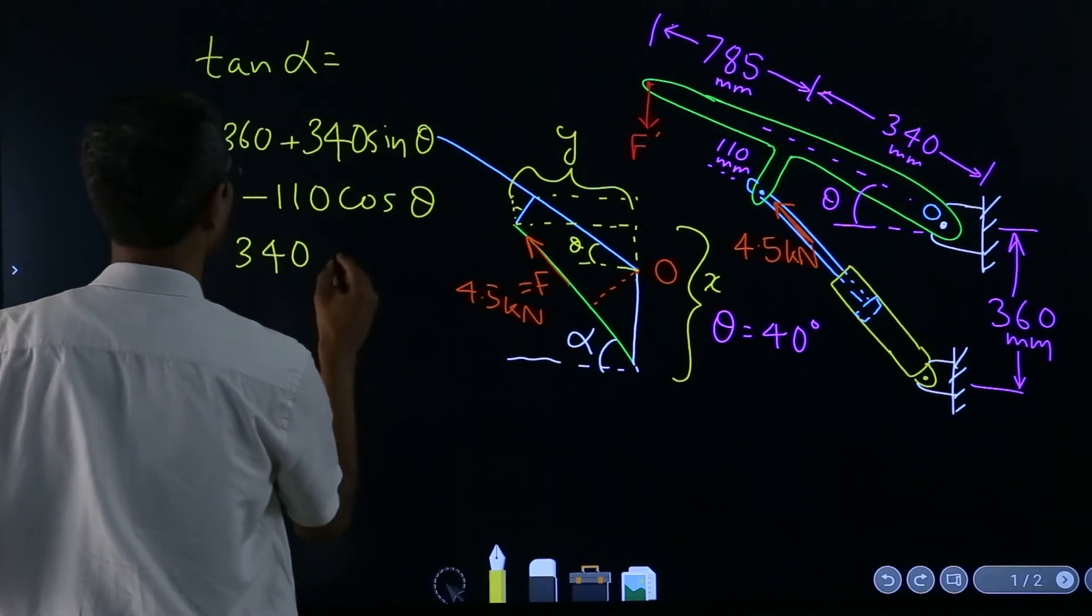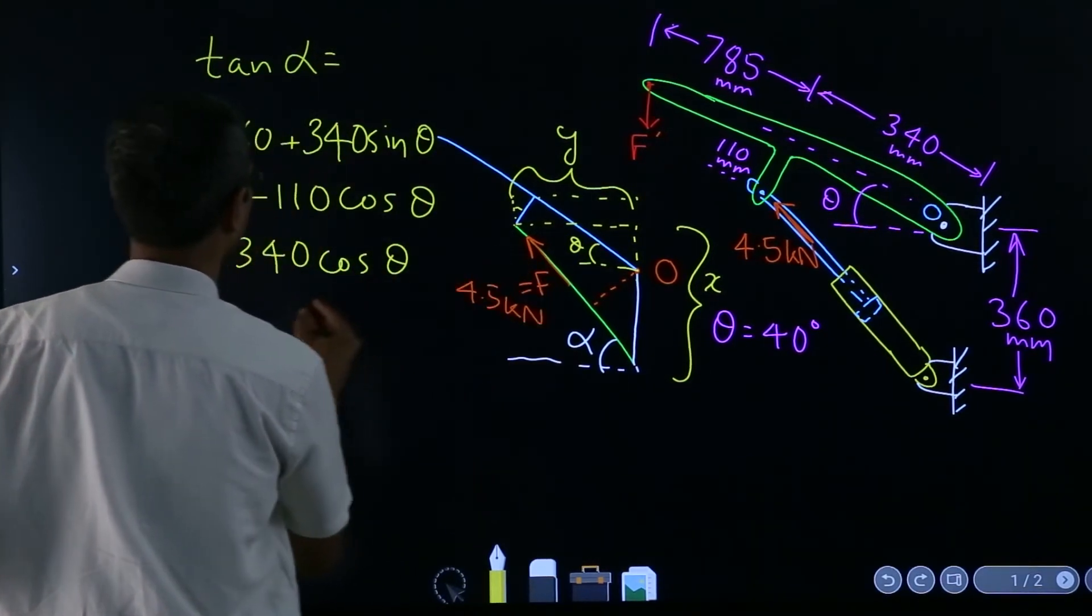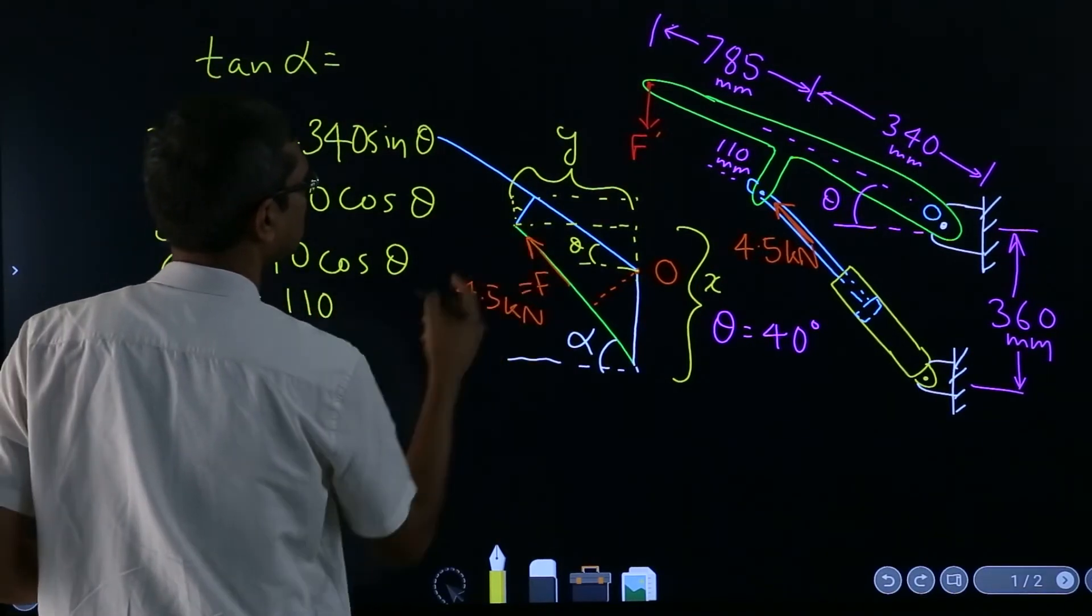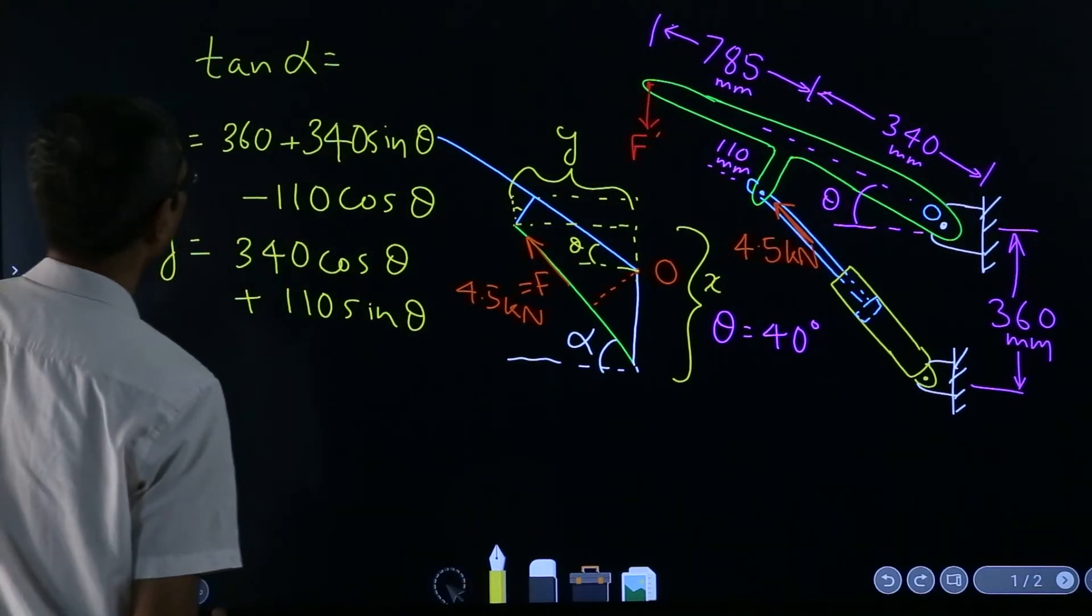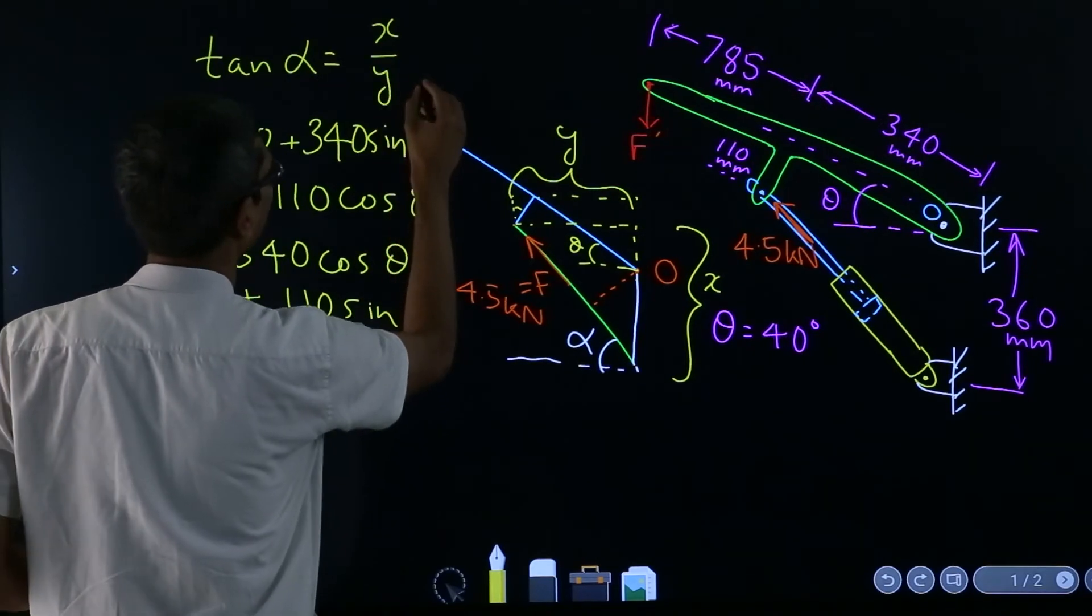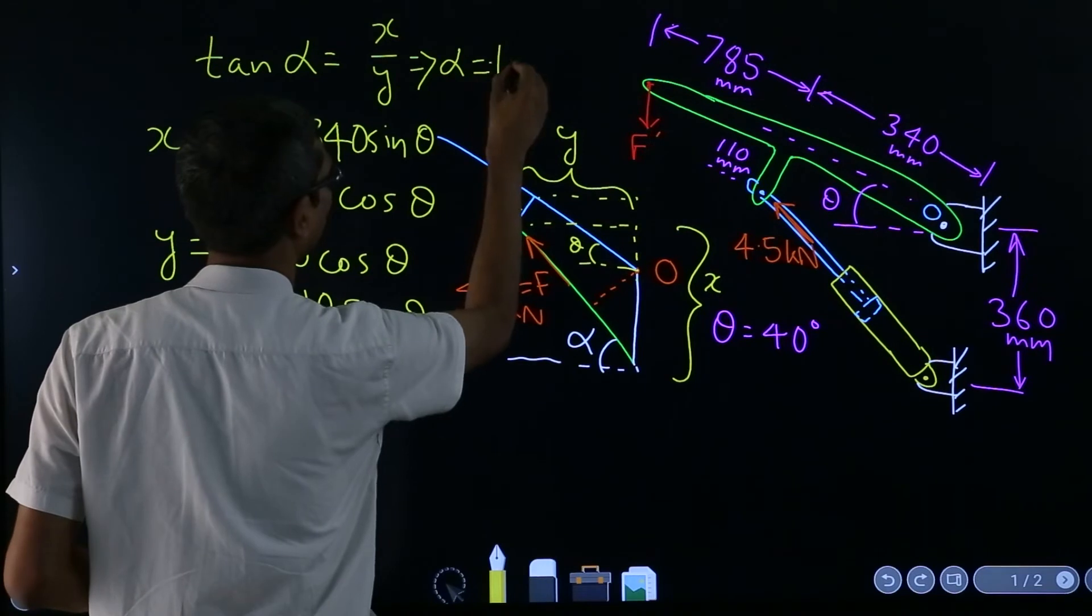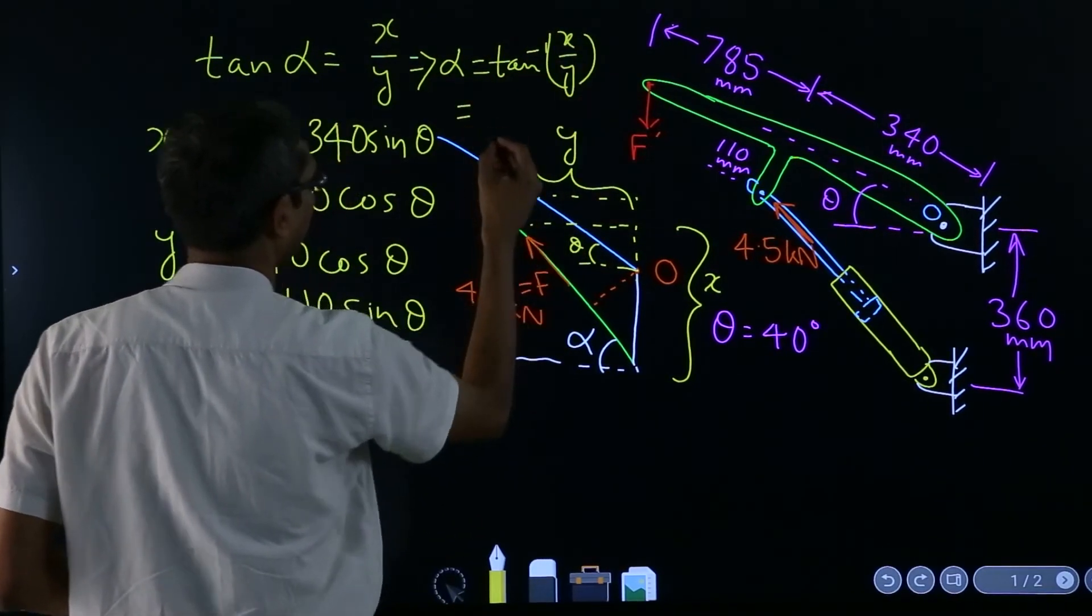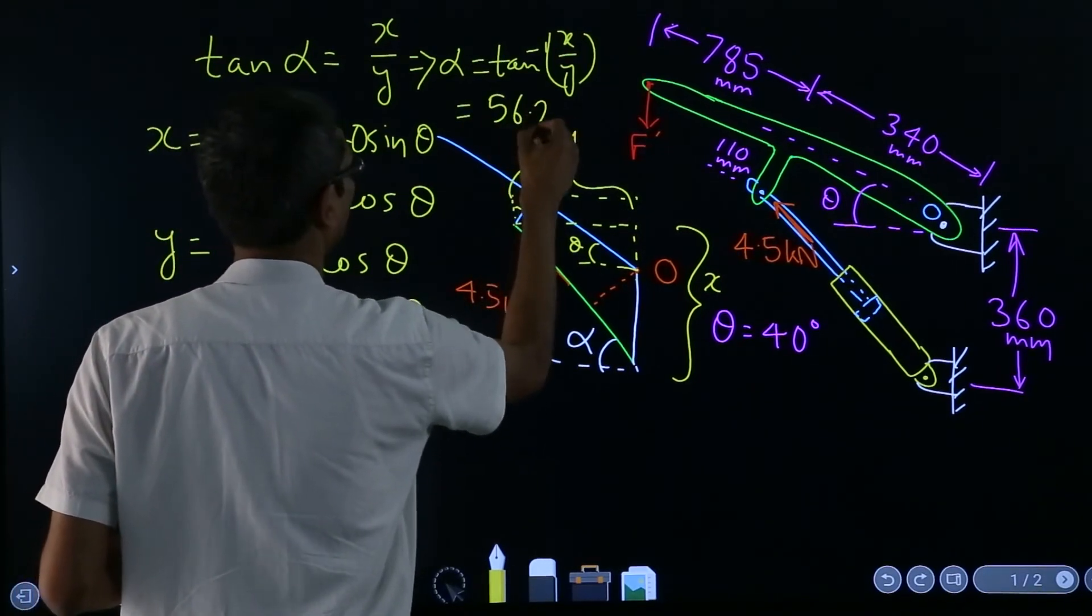So that will give you this length x. Then y will be 340 cos theta plus 110 sin theta. Now if you do x over y and then if you take alpha is equal to tan inverse of x over y, then the angle will come out to be 56.2 degrees.